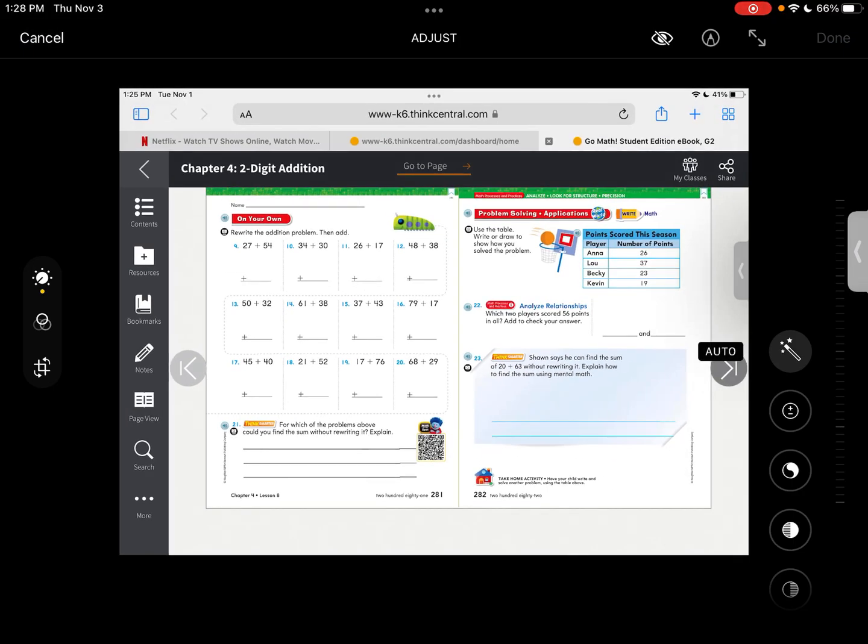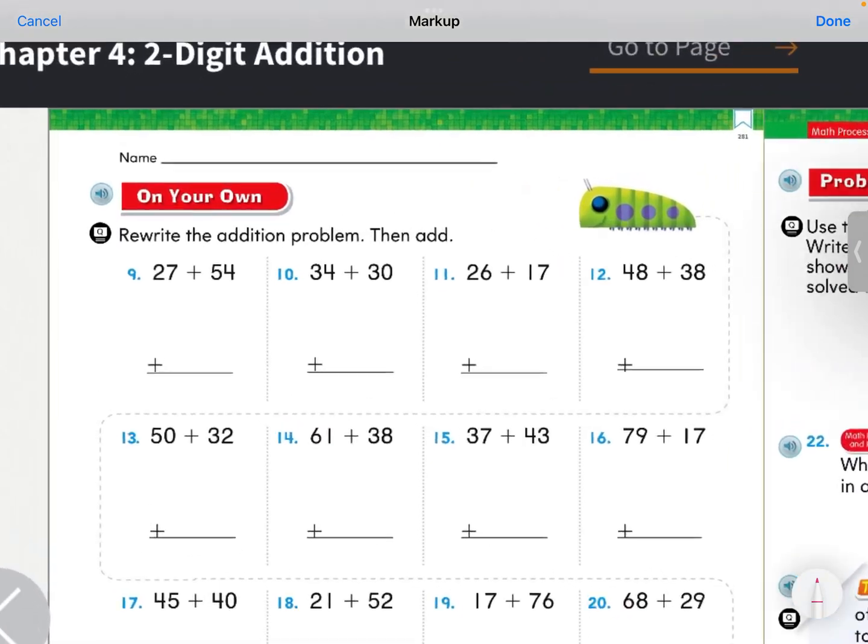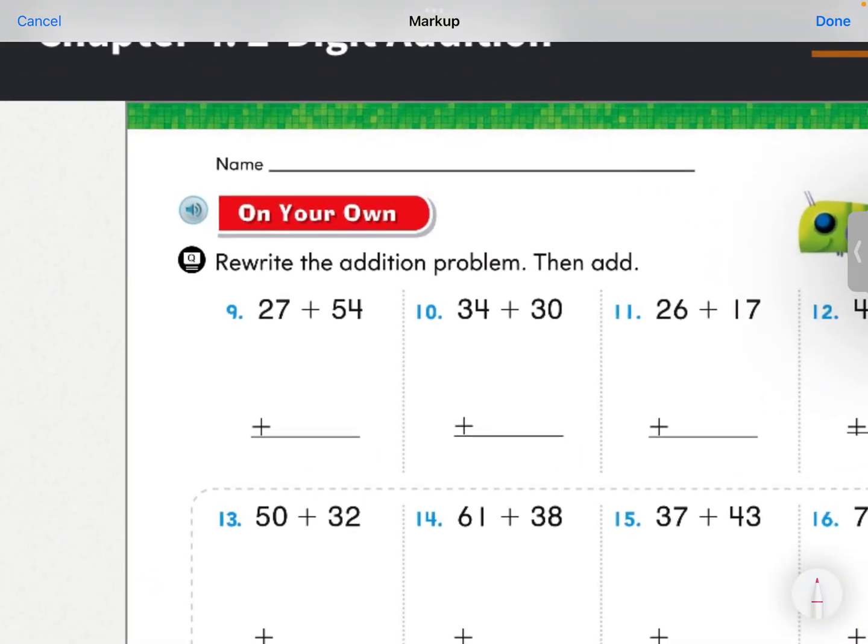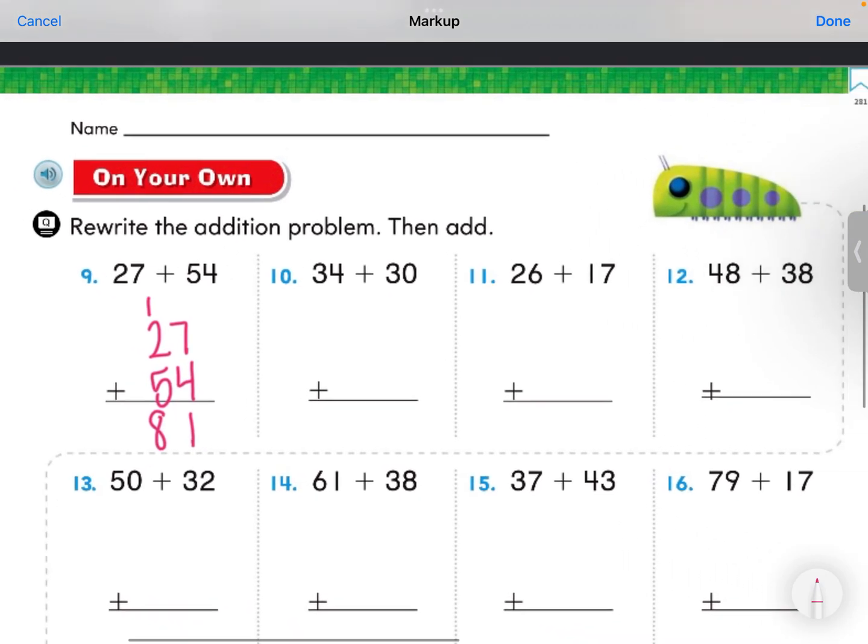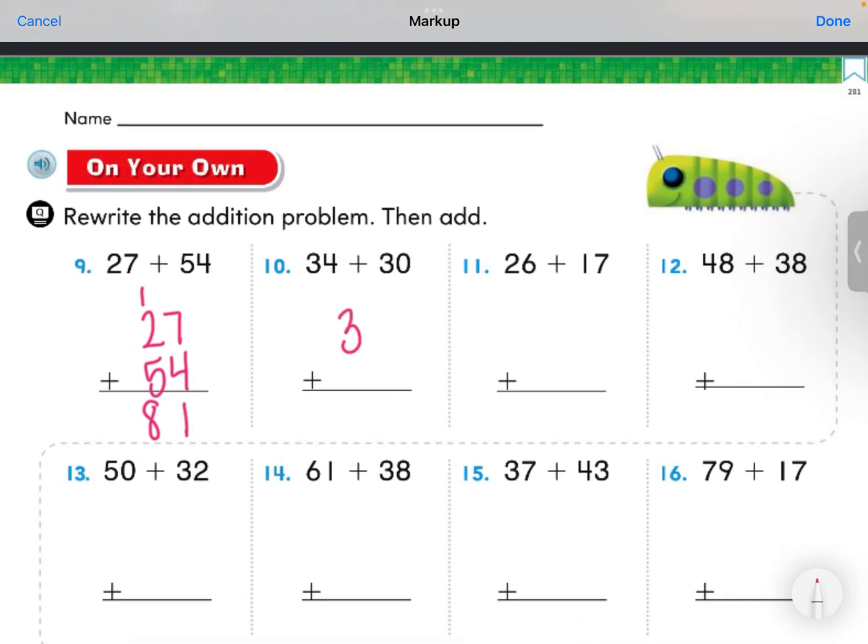We're going to be doing the same thing, rewriting the addition problem, and then add. 27 plus 54. 7 plus 4, 11. 5, 6, 7. One more than 7 is 8. 34 plus 30. 4 plus 0 is 4. 3 plus 3 is 6. Our answer is 64.